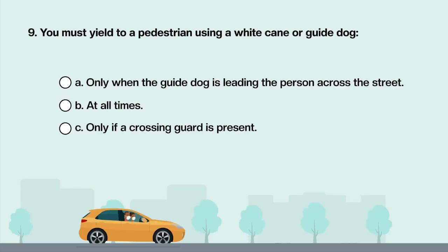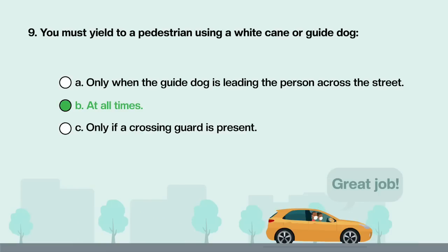You must yield to a pedestrian using a white cane or guide dog: A. Only when the guide dog is leading the person across the street. B. At all times. C. Only if a crossing guard is present. Answer is B: At all times.